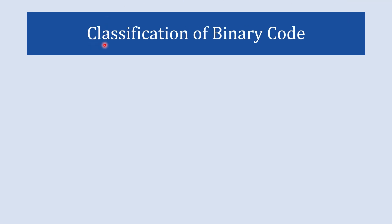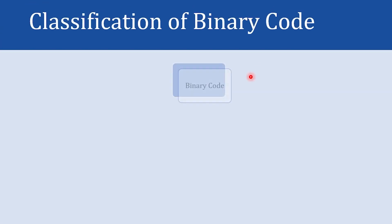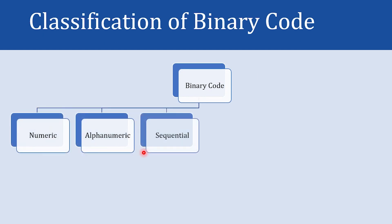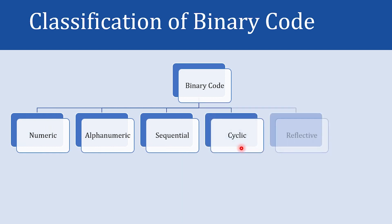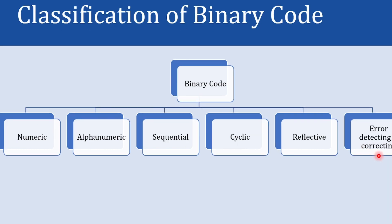In this video we are going to learn the classification of binary codes. Binary codes are classified as numeric code, alphanumeric code, sequential code, cyclic code, reflective code, and error detecting and error correcting code.